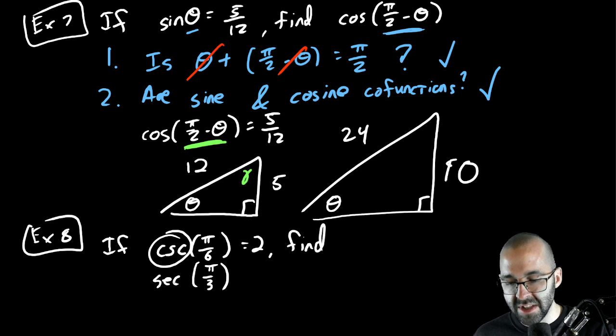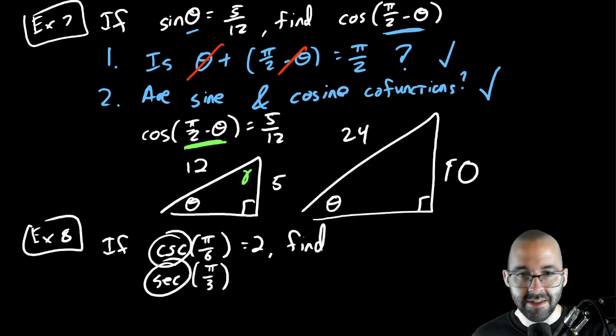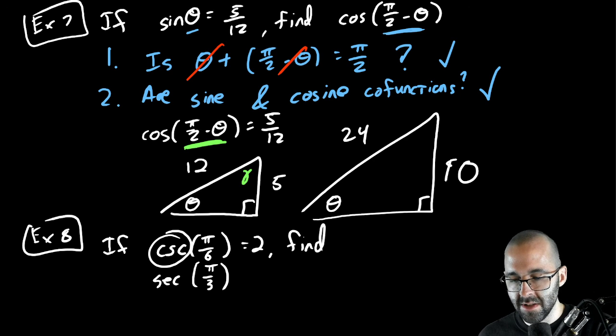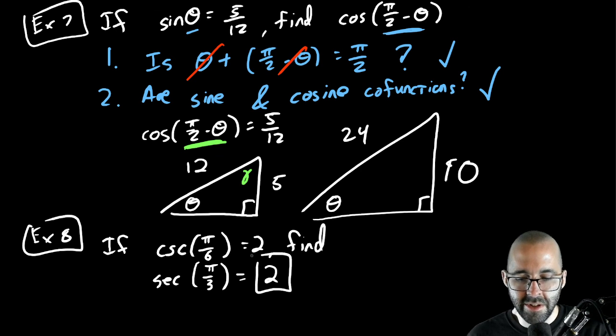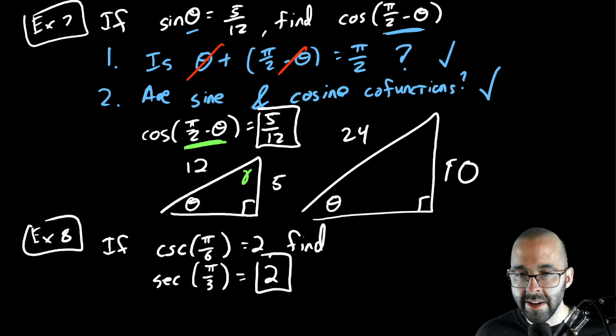So again, cosecant and secant are co-functions, it's the same word just with a co. 30 degrees, 60 degrees, they add up to 90 degrees, so it's also going to equal 2. All right, and that's all there is to it.